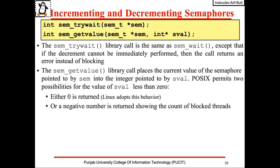sem_trywait and sem_getvalue can also be used. sem_trywait is a non-blocking version of the wait call, and sem_getvalue gets the current value of the semaphore into a variable. POSIX permits two possibilities for this value: either zero is returned or a negative number showing the count of blocked threads. In Linux you will always find zero.